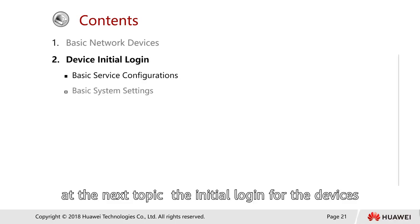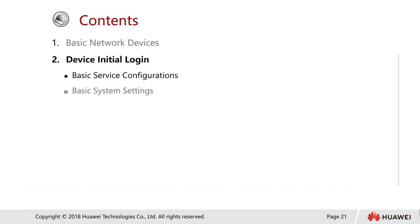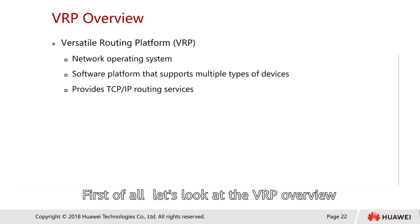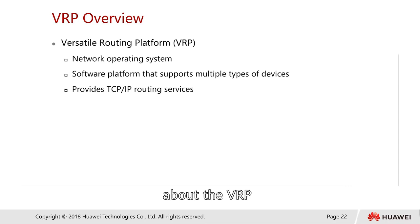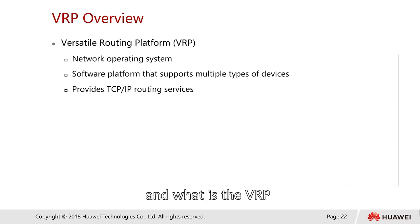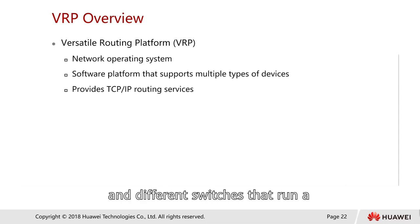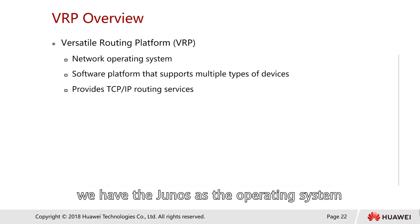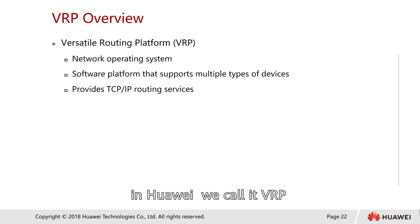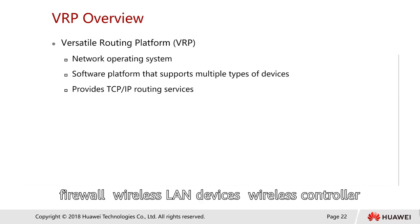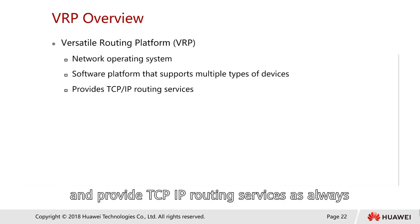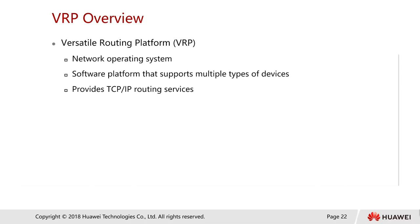Let's look at the next topic: the initial login for devices. First, let's look at the VRP overview. VRP stands for Versatile Routing Platform. It is a network operating system — just like in the industry we have Cisco IOS for Cisco devices and JunOS for Juniper devices. Huawei calls it VRP, and it's a software platform that supports multiple types of devices such as routers, switches, firewalls, wireless LAN devices, and wireless controllers. It also provides TCP/IP routing services.